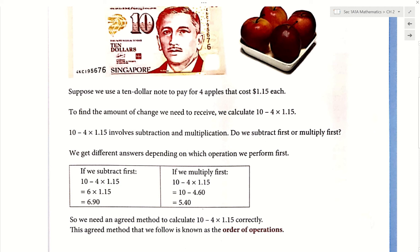That is a minus. That is a multiply. So do we do the 10 minus 4 first, or do we do the 4 times 1.15? How do we know? Can we try with our calculator? Will we get different answers?